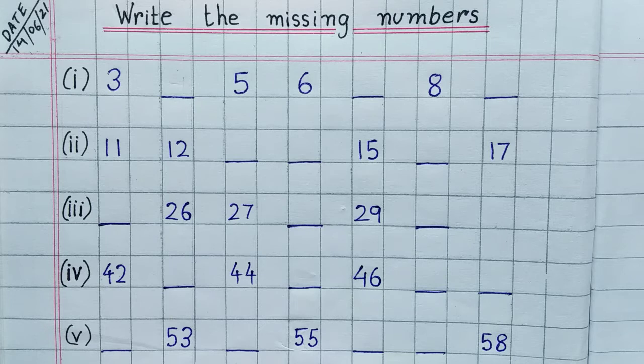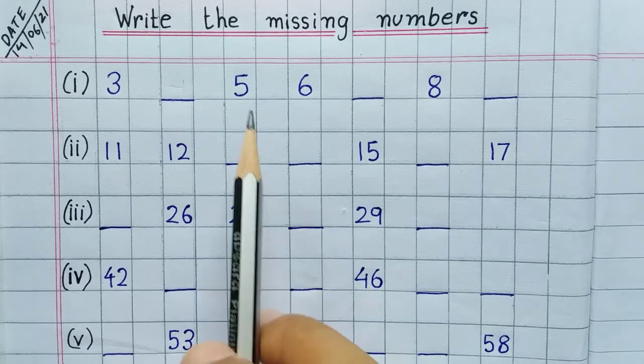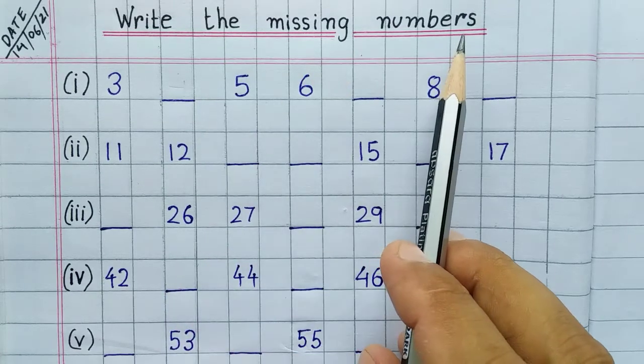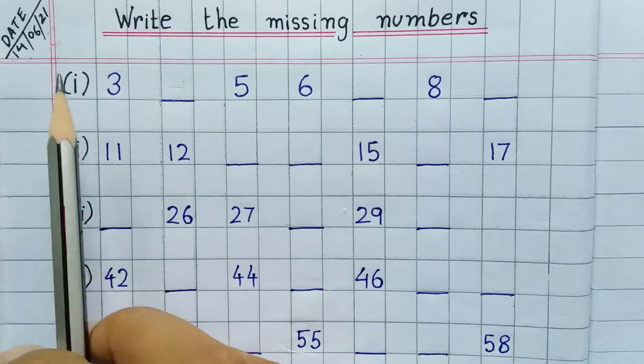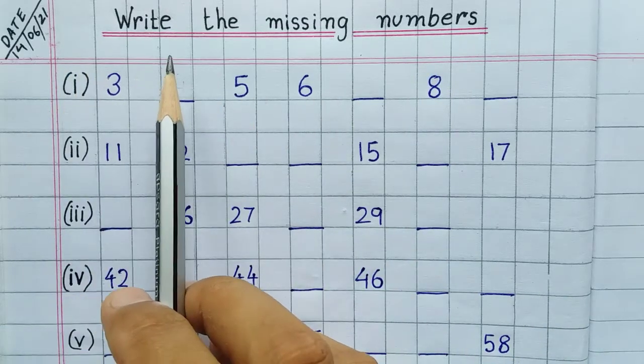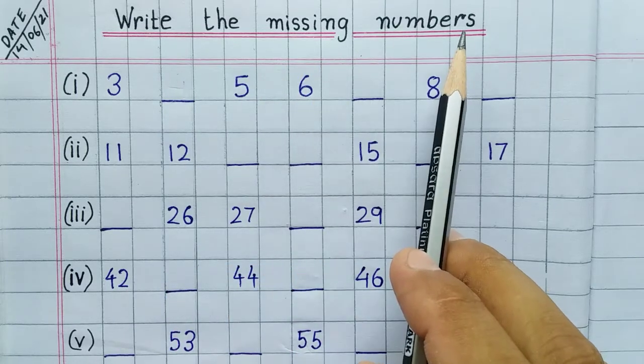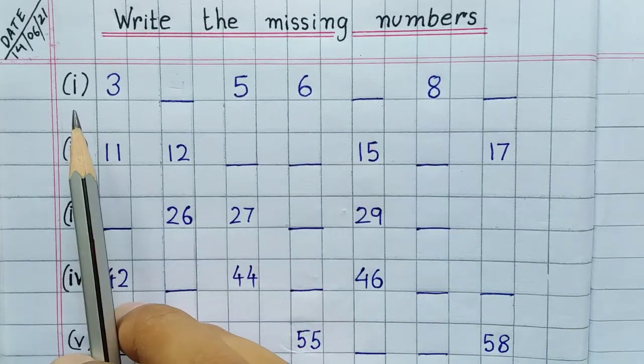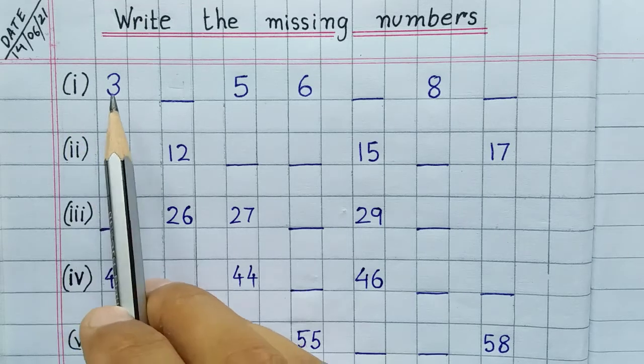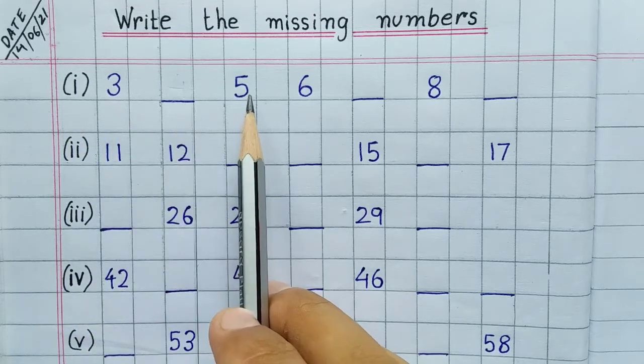Good morning children. Today we will learn how to write the missing numbers. First of all, write the date. After that, write the heading as 'write the missing numbers.' Now let us look at question number one: 3 dash 5, 6 dash 8 dash.